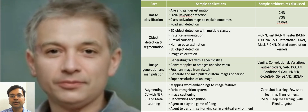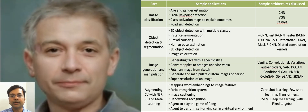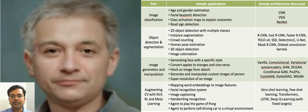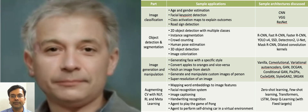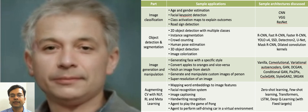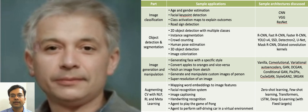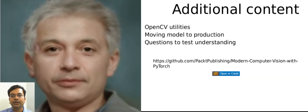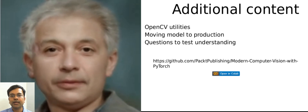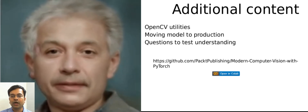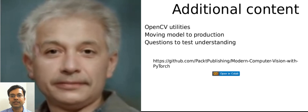Across this book, you will be learning about 35 different architectures as you build 50 different applications of deep learning. In addition, you will also be learning about OpenCV as well as moving a model to production on an AWS server.